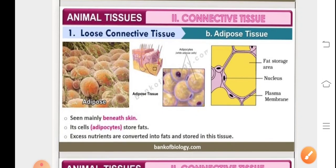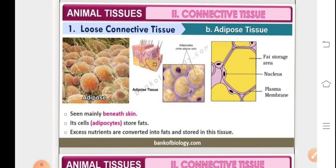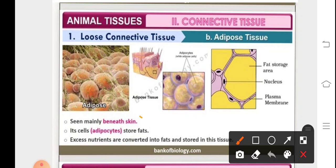Talking about the next loose connective tissue, that is the adipose tissue. It is present beneath the skin. The cells are called adipocytes which store the fat, and it also helps in shock absorption. The other function of the adipose tissue is to carry out storage. We can see that there's a fat storage area in the underlying diagram.